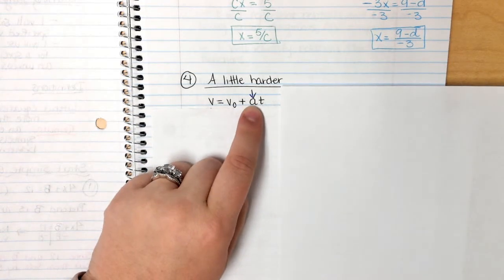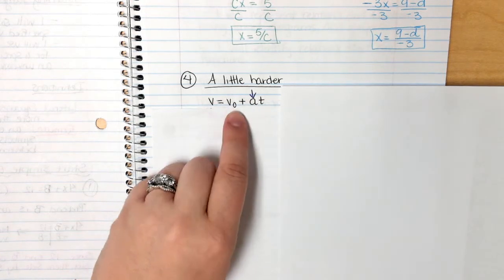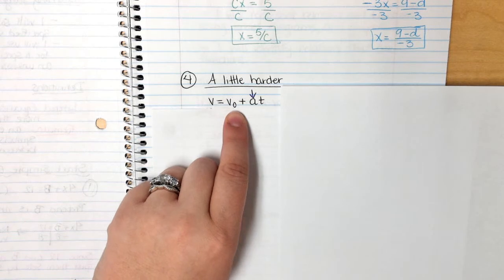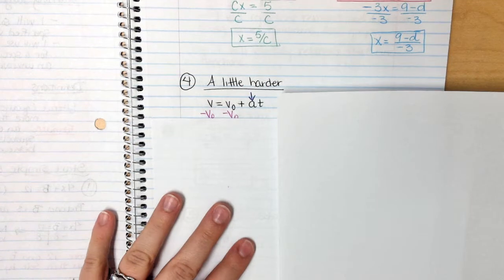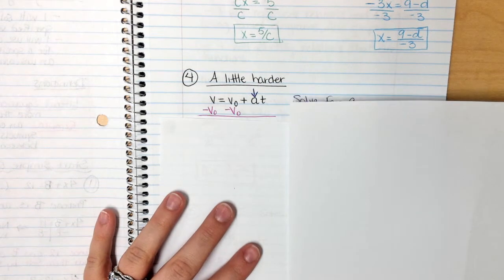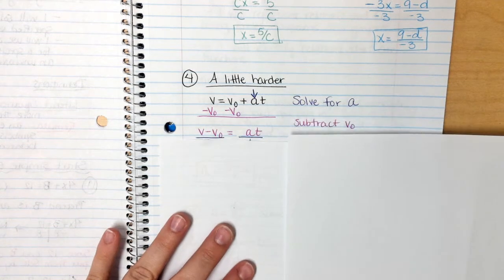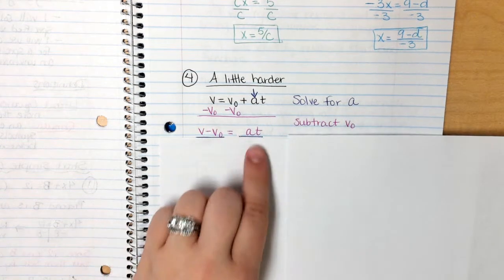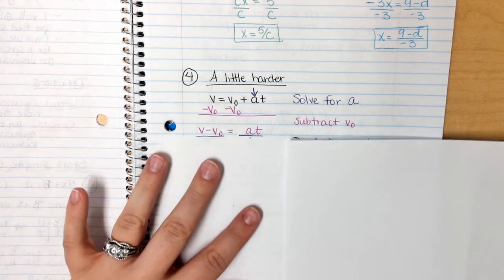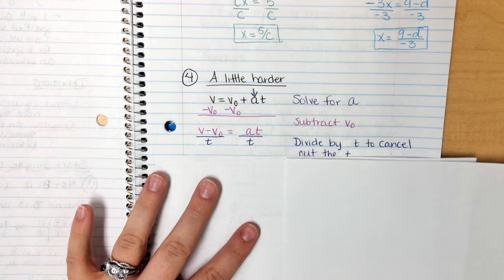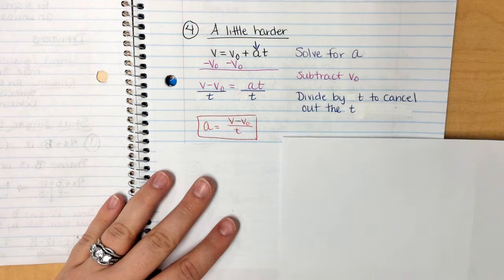So we need to get a by itself. This is you. You need some space. Your best friend is t because you guys are conjoined at the hip. And this guy is your annoying friend. The first person that you're going to kick out is always your annoying friend. He is a positive annoying friend. So we are going to subtract him over to the other side. V and V₀ are not the exact same. So we write them side by side. This is you. This is your best friend. You still need space from your best friend. So you're going to divide yourself from your best friend. When you divide from your best friend, you are left with a equals V minus V₀ over t.